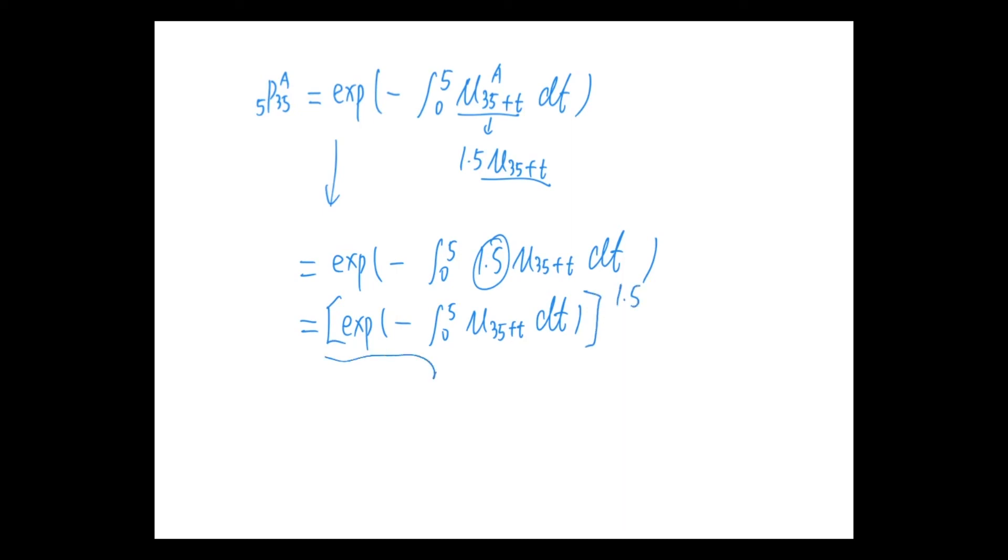And the term inside the parenthesis is exactly the probability of surviving five years in U.S. So it's 35, 5, to the power of 1.5. And this probability can be calculated using the table. It is L40 over L35 to the power of 1.5. And this is 0.99139.